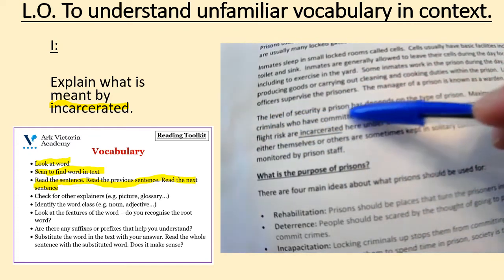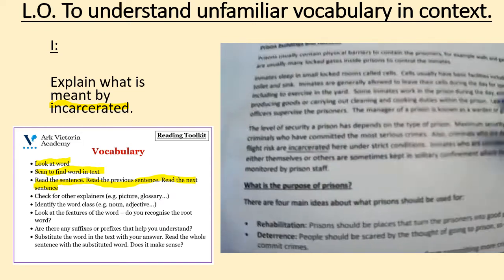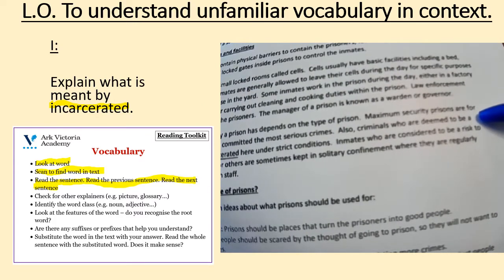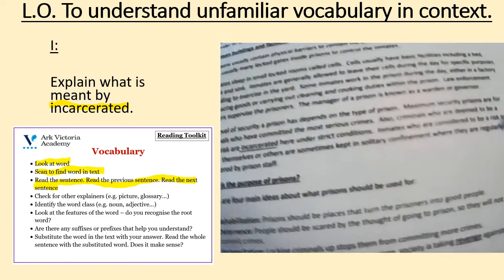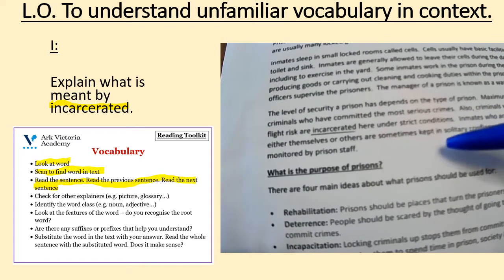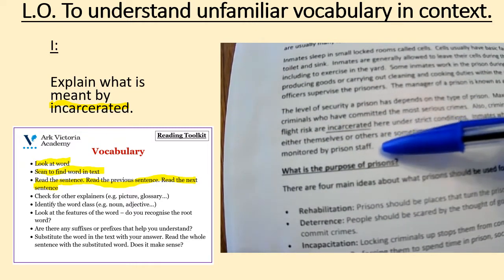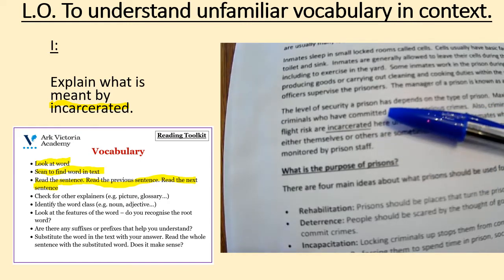The level of security a prison has depends on the type of prison. Maximum security prisons are for criminals who have committed the most serious crimes. Also, criminals who are deemed to be a flight risk are incarcerated here under strict conditions. Inmates who are considered to be a risk to either themselves or others are sometimes kept in solitary confinement where they are regularly monitored by prison staff. I'm still not entirely sure what incarcerated means, so I'm going to look back at the vocabulary toolkit to see if that can help me.